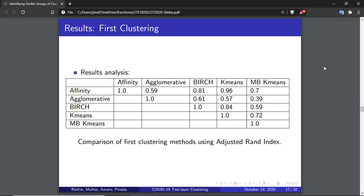We use the adjusted RAND index metric to compare the different clustering methods and how different the clusters they formed are. For example, we can see affinity propagation and k-means method clusters the countries in a similar way, while agglomerative and mini-batch k-means do it differently.